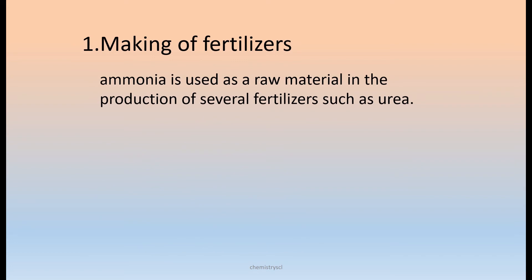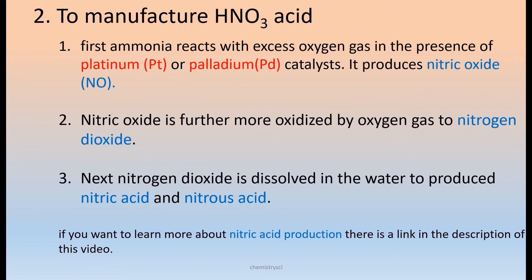Our first use is making of fertilizers. Ammonia is used as a raw material in the production of several fertilizers such as urea.